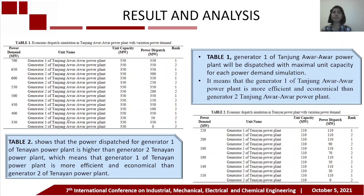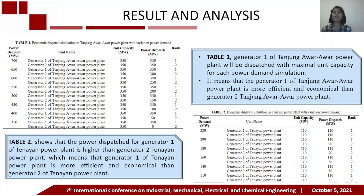From Table 2, we can see that the power dispatch for generator 1 of Tanayan power plant is higher than generator 2 of Tanayan power plant, which means that generator 1 of Tanayan power plant is more efficient and economical than generator 2.